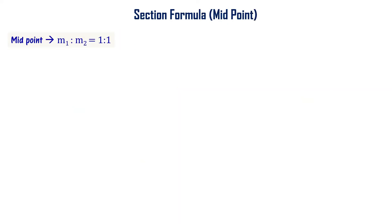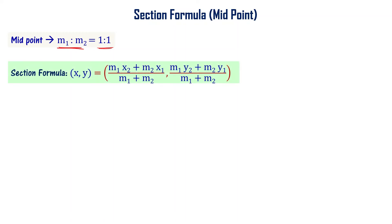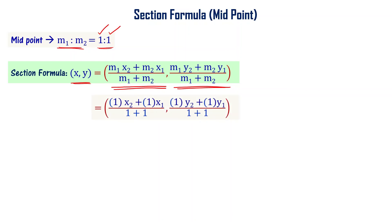Now let's find the midpoint. When it is a midpoint, the division ratio is 1 is to 1, meaning it divides equally. So m1 equals 1 and m2 equals 1. Substituting into the section formula: 1 times x2 plus 1 times x1 divided by 1 plus 1, comma 1 times y2 plus 1 times y1 divided by 1 plus 1, which gives x2 plus x1 divided by 2, comma y2 plus y1 divided by 2 — the midpoint formula.